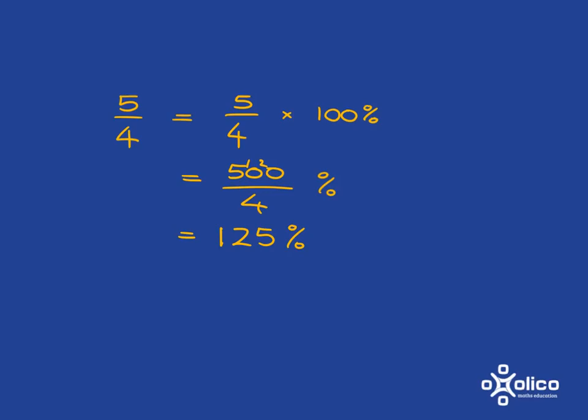And now if we want to go to the decimal, it's very easy because we know that 125% is just 125 over 100, and so we're dividing by 100, so we're going to move the decimal comma over 1, 2, and so we're going to have 1, 2, 5. So 5 over 4 as a fraction is equal to 125%, which is equal to 1.25.